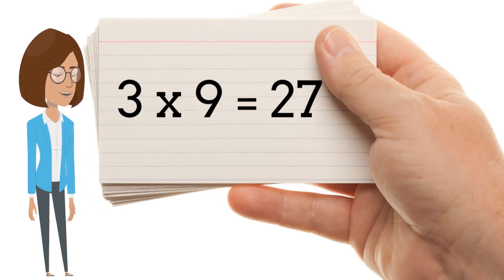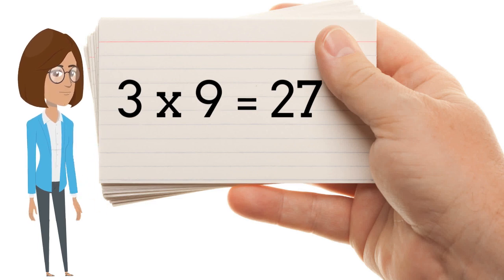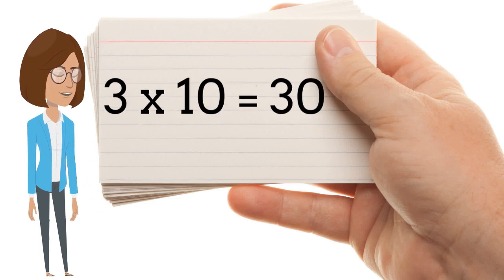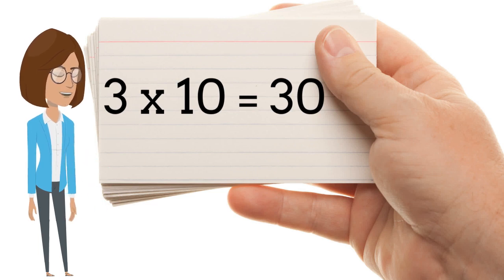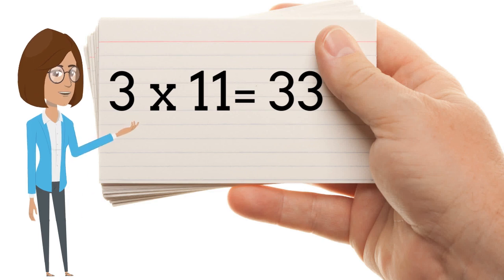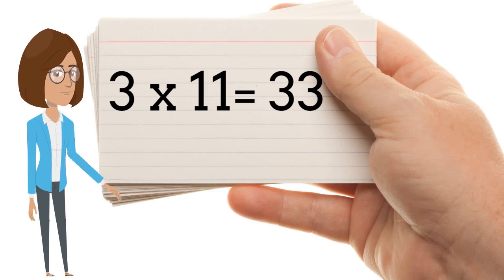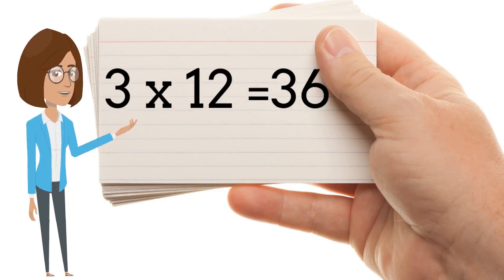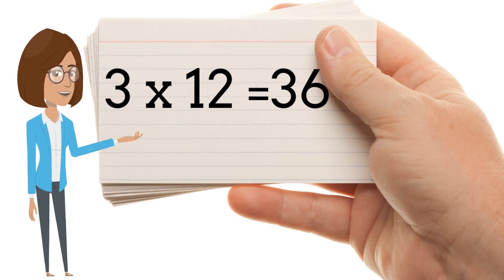3 x 9 is 27. 3 x 10 is 30. 3 x 11 is 33. 3 x 12 is 36.